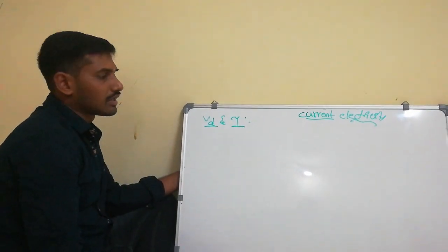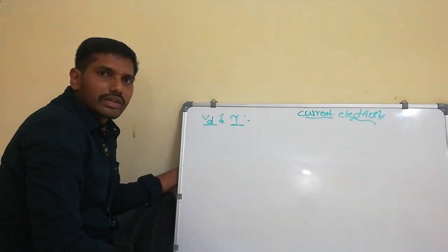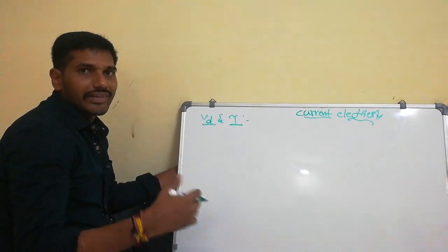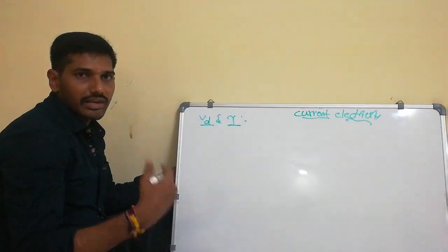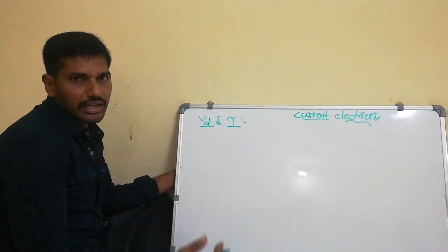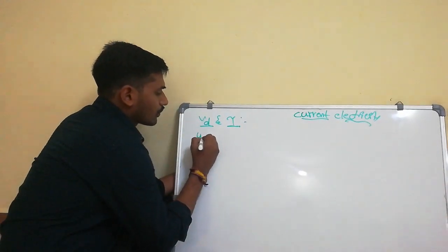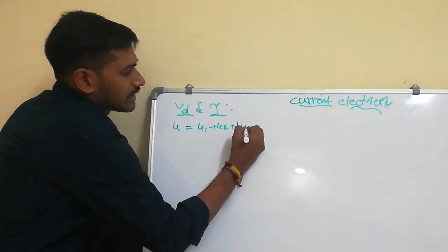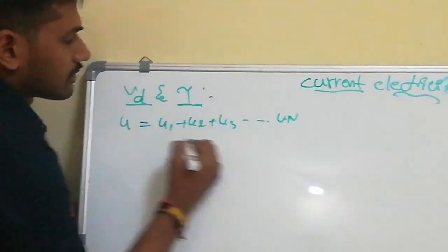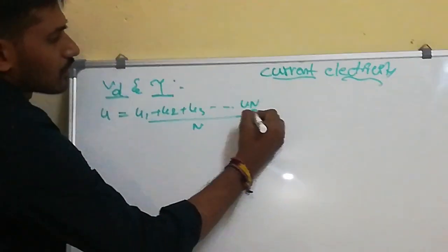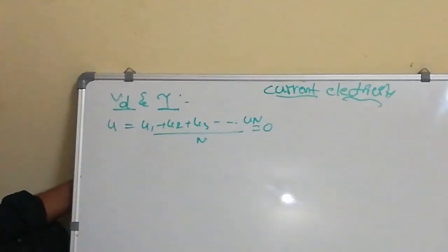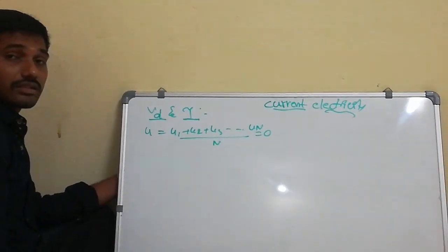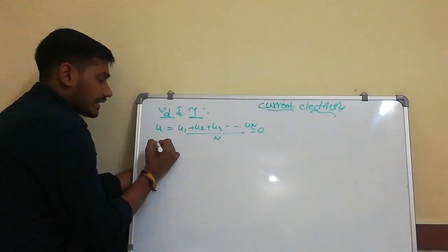Before applying the electric field on any conductor, the initial velocity of an electron will be zero. So the initial average velocity: u = (u1 + u2 + u3 + ... + uN) / N = 0. The initial velocity of an electron before applying the electric field is zero. Remember that.